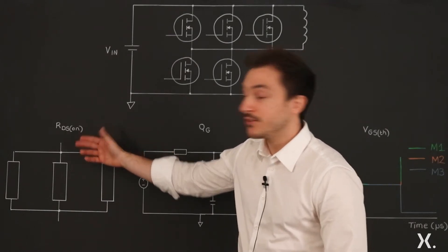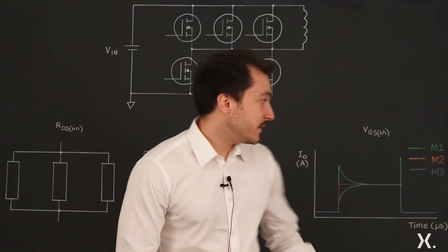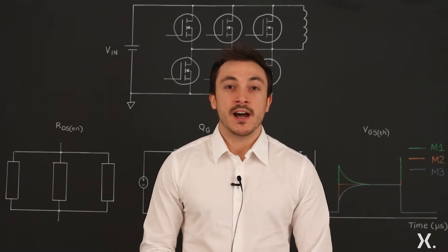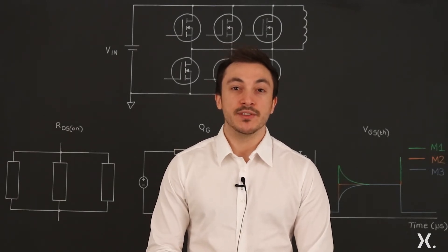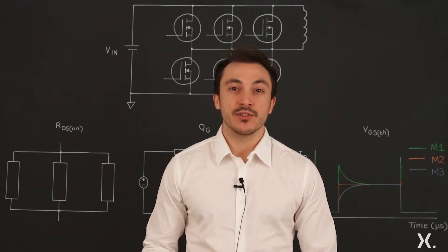on-state resistance RDS(ON), input charge QG, and threshold voltage. The spreads are unfortunately inevitable during the manufacturing process of silicon die. The lower the spread, the more synchronized the operation of the MOSFETs.